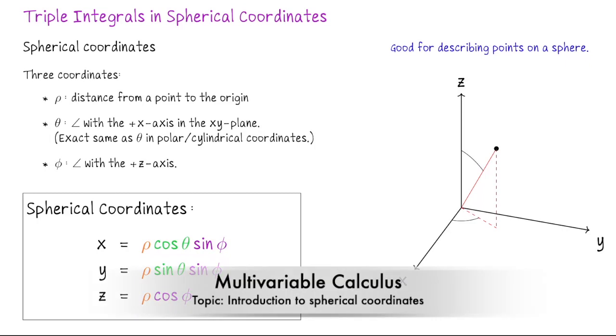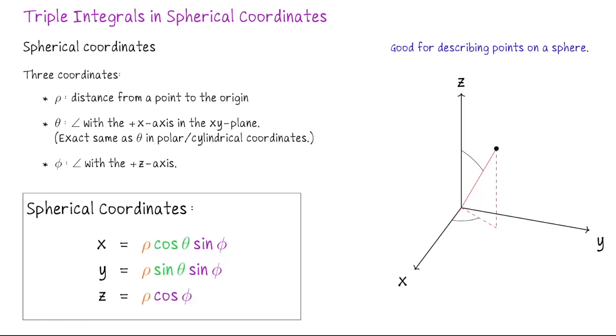We've seen how polar coordinates and cylindrical coordinates are designed to describe regions that look like they live in a disk or are related to a cylinder. There's another type of alternative coordinate system that we can use in R³, and that is spherical coordinates, which is great when you want to describe regions that look like they belong to a sphere.